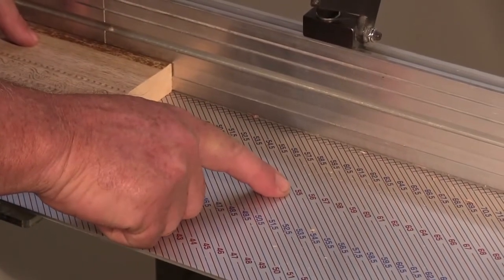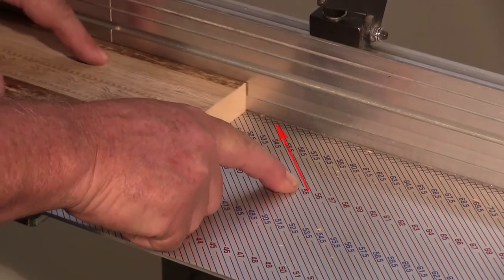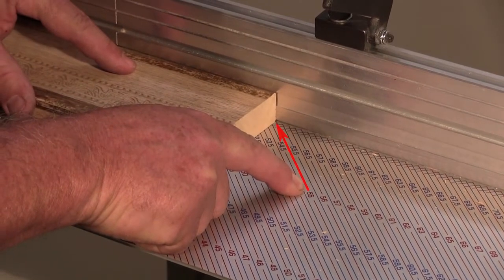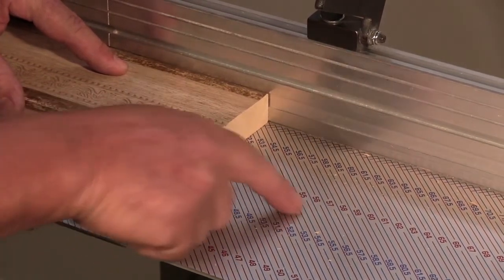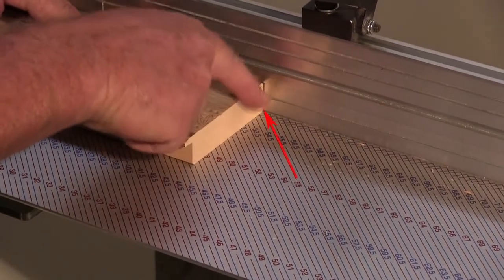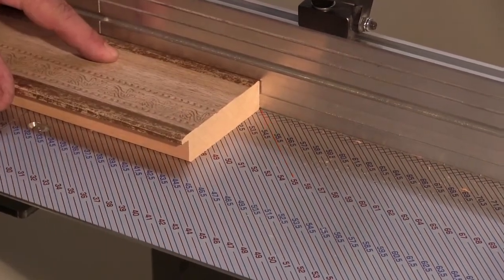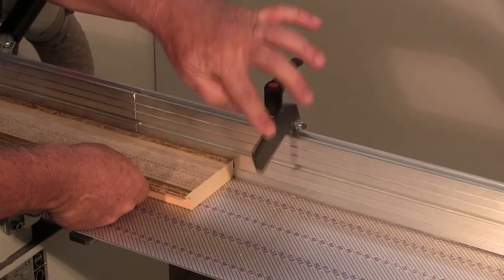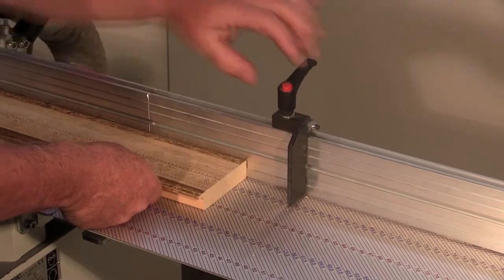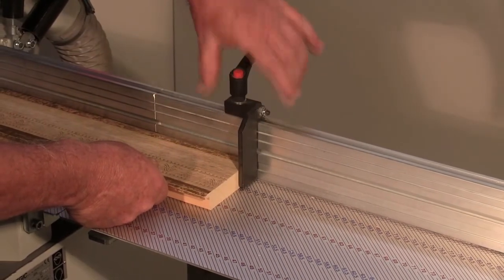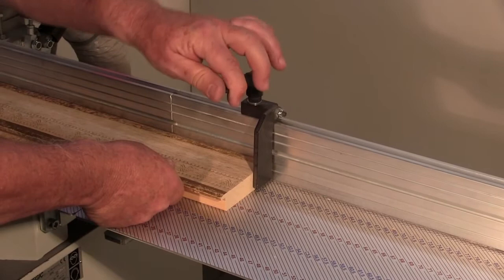Now I want to cut a 55 cm piece of moulding at 90 degrees. I move the moulding to the oblique line pointing 55 cm. I lower the lever of the measuring stop, lean it to the frame, and tighten the handle that locks the measuring stop.